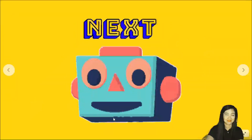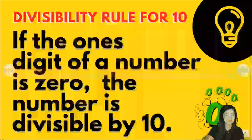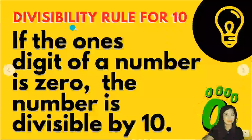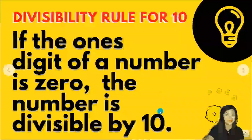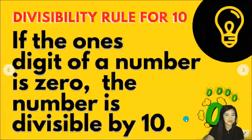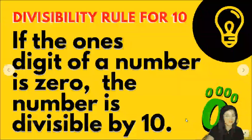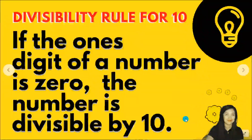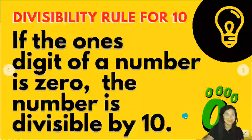Let's move on with another divisibility rule — the divisibility rule for 10. If the 1's digit of a number is 0, the number is divisible by 10. This is very easy. Let's have some examples.